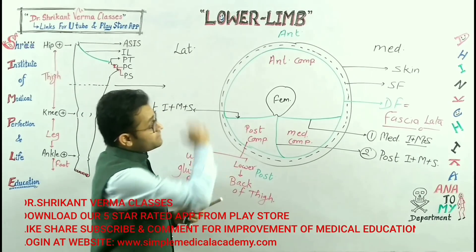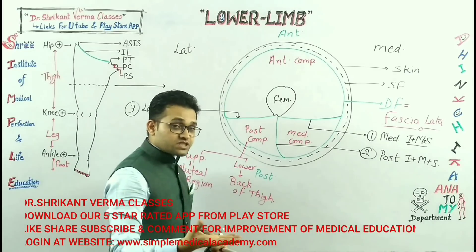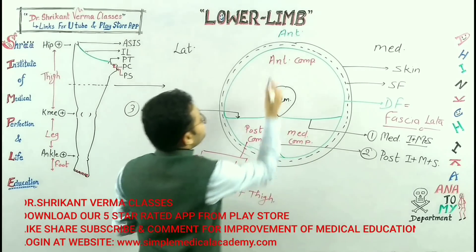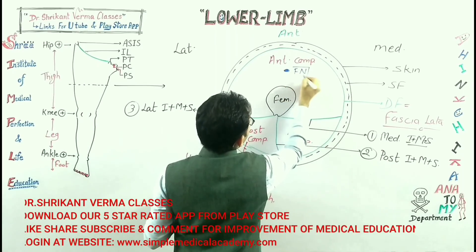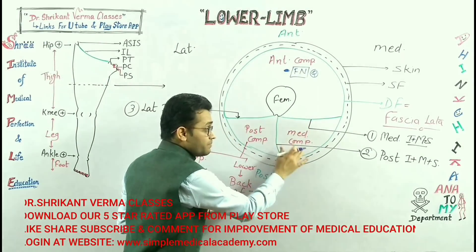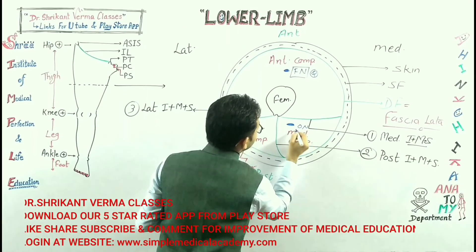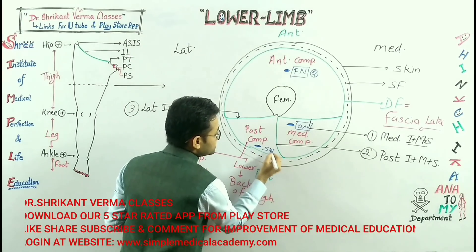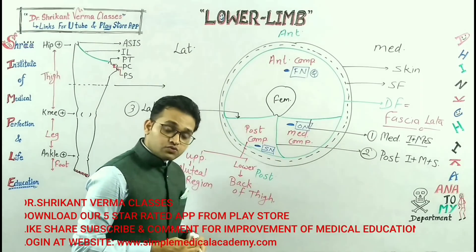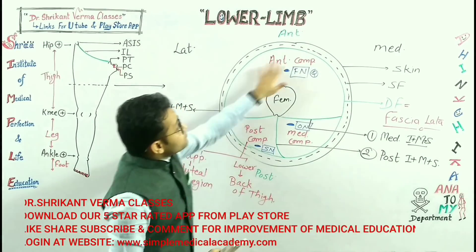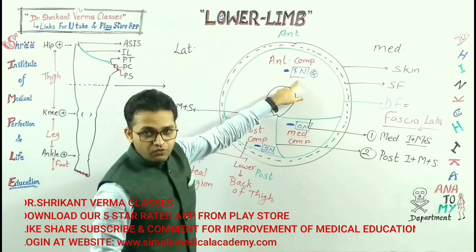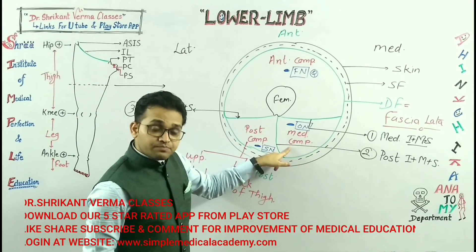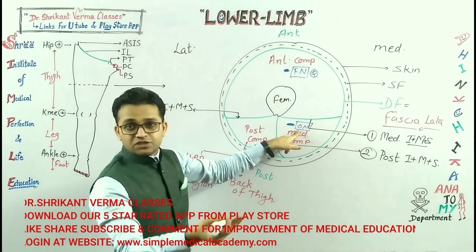These are the various divisions of the thigh. Now we will do dissection and apply Hilton's law. When we do dissection in each compartment, we get particular nerves. In the anterior compartment, the nerve present is the femoral nerve. The nerve present in the medial compartment is the obturator nerve — this is an MCQ point. The nerve present in the posterior compartment is the sciatic nerve, the thickest nerve of the body. According to Hilton's law, all muscles of the anterior compartment must be supplied by the femoral nerve, and all muscles of the medial compartment must be supplied by the obturator nerve.